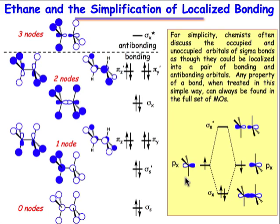We should expect 14 molecular orbitals created by the LCAO process. We're not going to generate all of them — just the ones that are occupied and the one antibonding orbital that's lowest in energy.